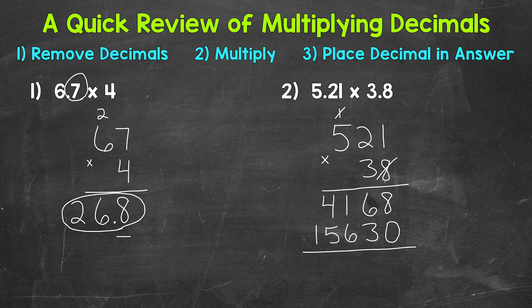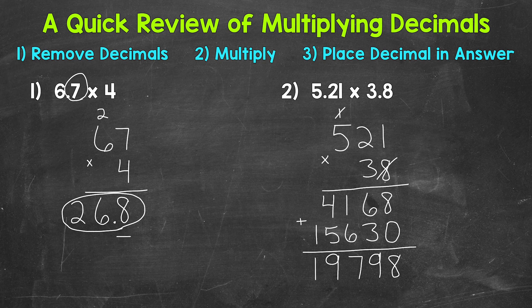Now we add, so 8 plus 0 is 8, 6 plus 3 is 9, 1 plus 6 is 7, 4 plus 5 is 9, and then we have a 1. So once we get to this point,